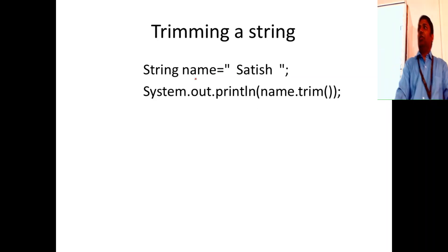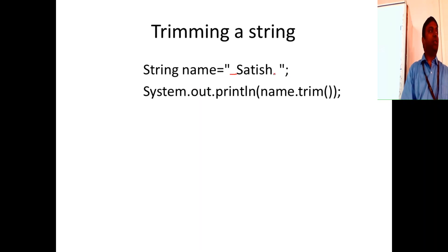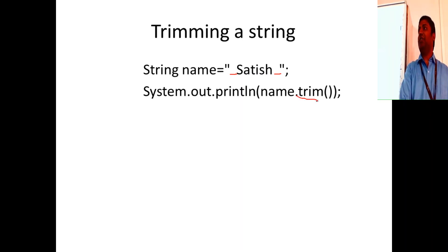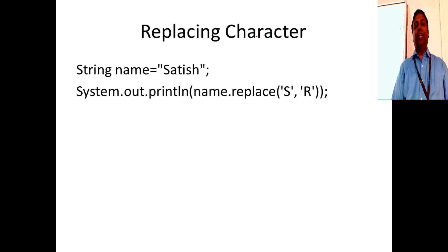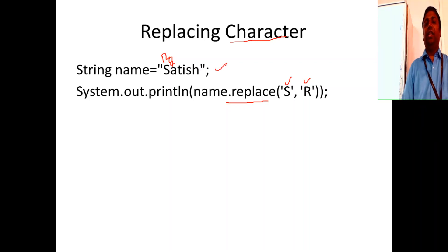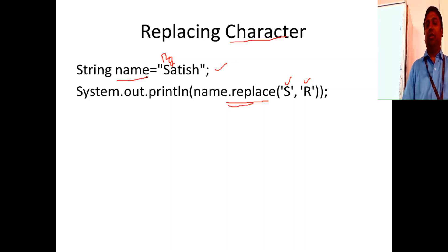Trimming a string: when users enter input with leading or trailing spaces, you use `.trim()` to remove them. For replacing a character, use `.replace()`. For example, replacing 's' with 'r' in "Satish" would give "Ratish". Use `name.replace('s', 'r')`.